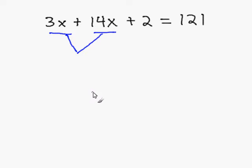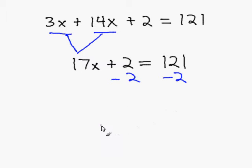3x plus 14x will become 17x, and the rest of my equation remains the same. Now that I have one instance of x, I can simply solve for my equation. Subtract 2 on both sides of the equal sign.